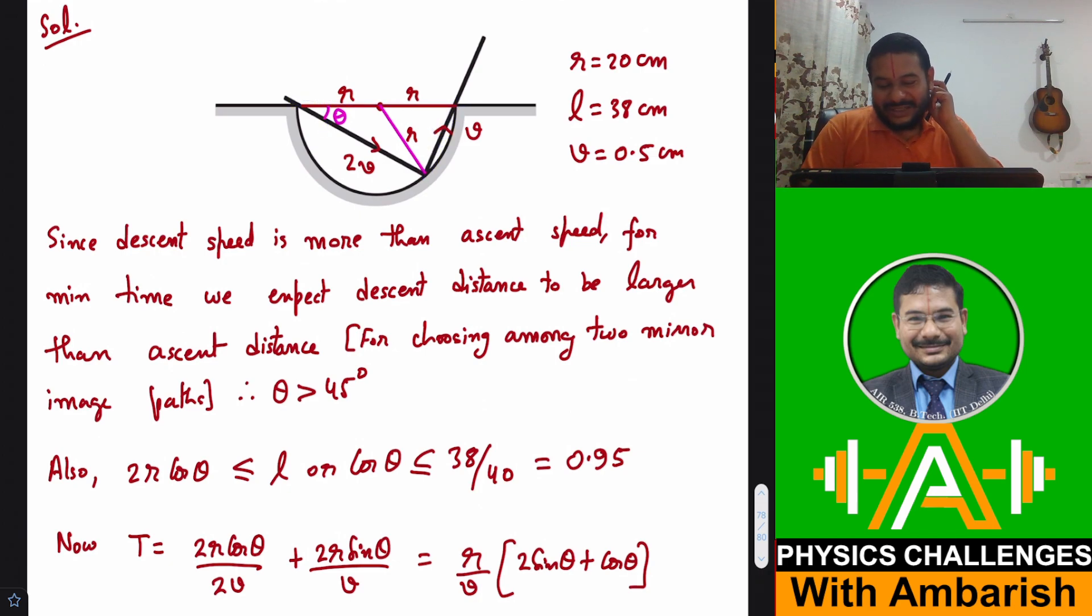One thing you can see is that since descent velocity is more than the ascent velocity, out of two symmetric paths, that means one path is like this and the other path is like this. Obviously, the first path will require smaller time. Why? Because the descent velocity is 2V and ascent velocity is V. So for the same amount of these two distances or rather mirror image distances, you can see that we would prefer a path with greater descent distance and smaller ascent distance.